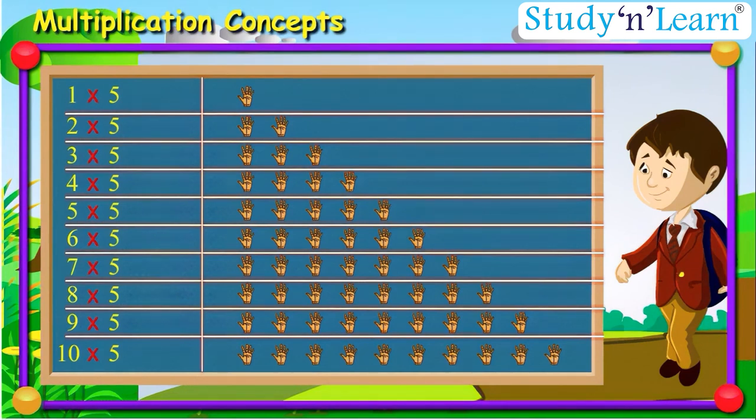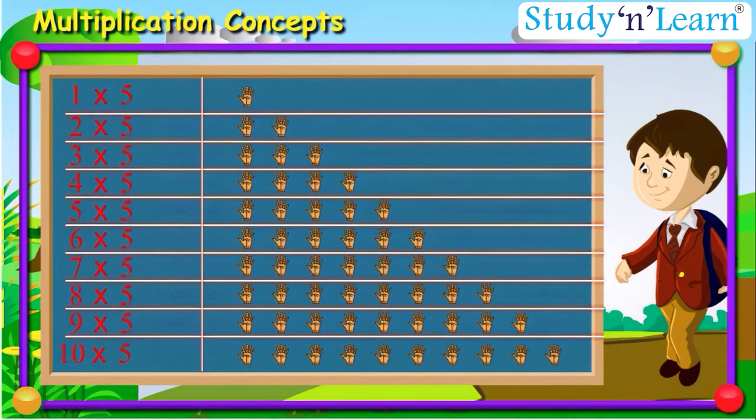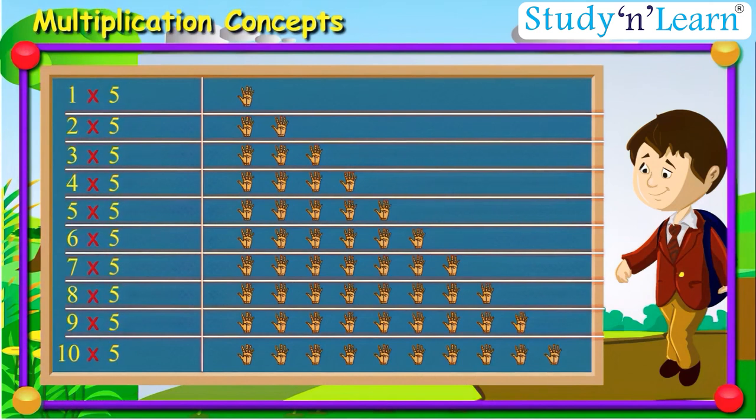Now, in order to find the total number of fingers, we need to multiply the number of hands, that is, groups of fingers, with the number of fingers in each hand, which is 5 in this case.